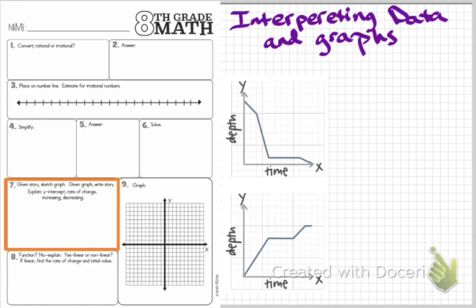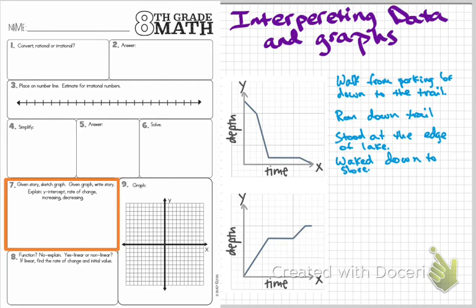I'm going to write a story like this: I walk from the parking lot down to the trail. Notice I've used the clue word 'down,' which tells me my depth is decreasing, and the word 'walk' tells me whether I'm going fast or slow. Then I ran down the trail — that tells me direction and rate of change. Then I stood at the edge of the lake, so my depth is not changing over time. Then maybe I walked all the way down to the shore, put my feet in the water, and ended the day there.